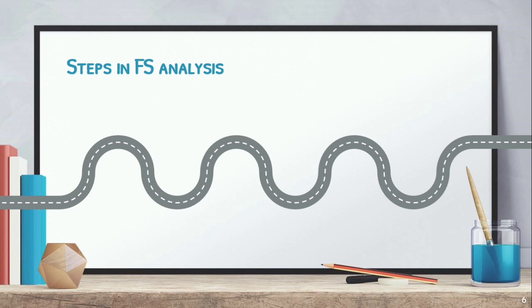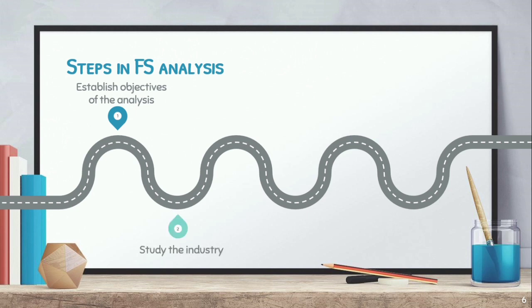What are the steps in financial statement analysis? First, we have to establish the objectives of the analysis. Before we conduct an analysis, the first thing we do is set our objectives — determine what we are analyzing for. Then, the second step is to study the industry where our business belongs.